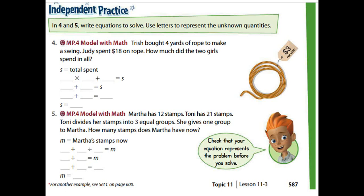Now question five. Martha has twelve stems and Tony has twenty-one stems — so we have two persons in the question. Then Tony divides his twenty-one stems into three equal groups. He gives one group to Martha. We need to find out how many stems Martha has now. M is equal to Martha's stems, which we have to find out.